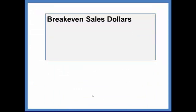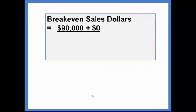And we will be computing this in total sales dollars. We will take the fixed cost of $90,000 plus zero desired profit at breakeven and we will divide by the contribution margin ratio. Total fixed cost plus desired profit divided by the contribution margin ratio. This is the contribution margin ratio method.